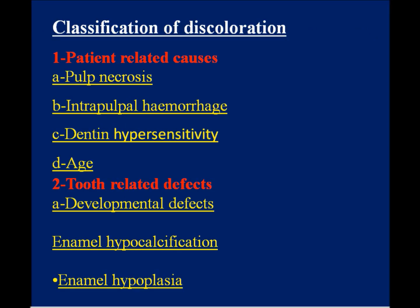Classification of discoloration. Number one: patient-related causes. A. Pulp necrosis. B. Intrapalpal hemorrhage. C. Dentine hypersensitivity. D. Age.